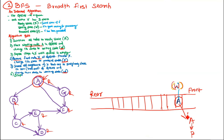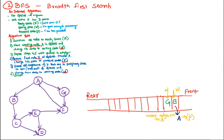Step 5 — insert all adjacent neighbors that are in the ready state into the rear of the queue. For vertex A, the adjacent nodes in the ready state are B and G, which are not yet inserted into the queue. So we insert B and G into the queue and change their state to waiting state.